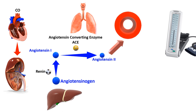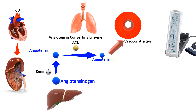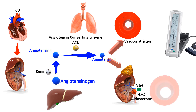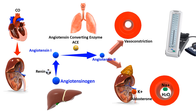It directly induces vasoconstriction. It also stimulates the secretion of aldosterone hormone from the adrenal glands. Aldosterone in turn stimulates the nephrons to reabsorb sodium and water from renal tubules back into circulation, in exchange for potassium ions that will be excreted with urine.